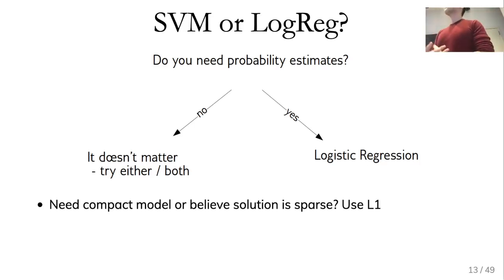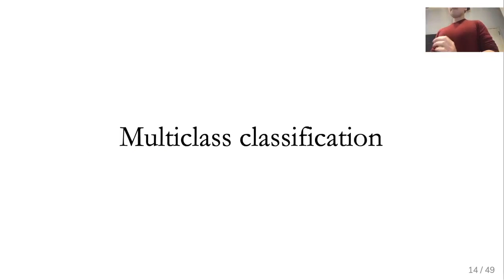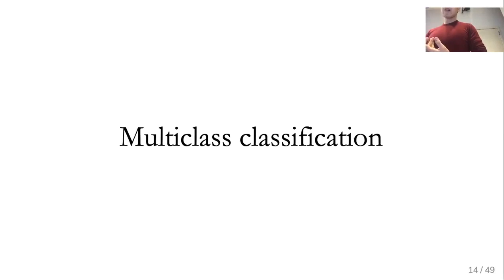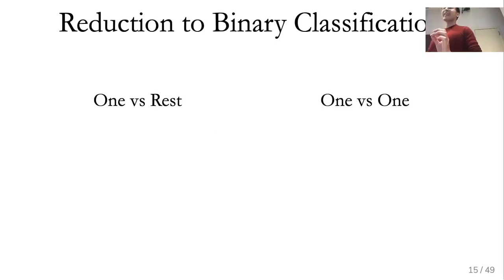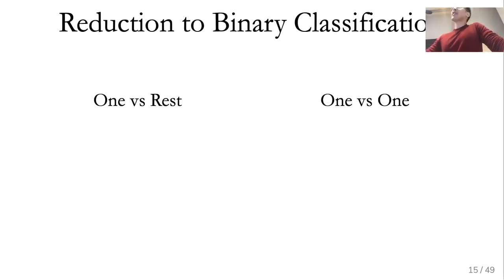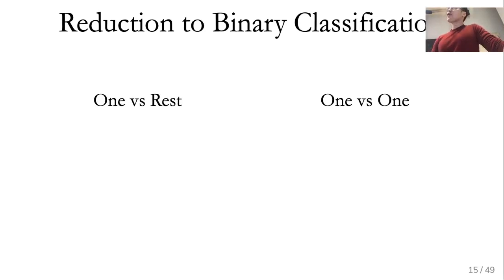Next: how do we extend this to multi-class classification? This whole theory works for binary classification. There are two ways to do multi-class classification — both heuristics that work in practice. There's one-versus-rest and there's one-versus-one. In each case, you're training multiple binary classification models.